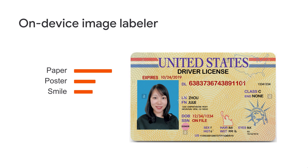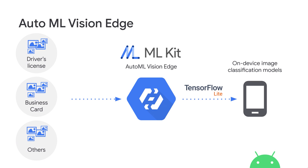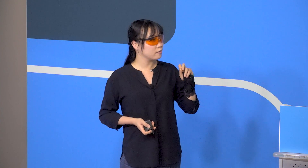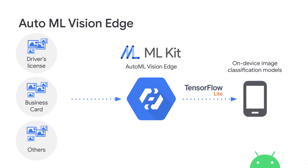For this particular case, those generic labels aren't what we're looking for. We want to identify the specific type of document in view. That's why we may want to train our own model for document classification. This can be done in ML Kit using AutoML Vision Edge, where you upload a dataset of images with labels like driver license, business card, and others. The dataset can be as few as tens of images — quite lightweight — and AutoML Vision Edge generates an optimized TensorFlow Lite model for on-device image classification.